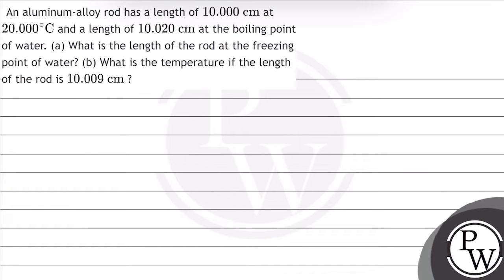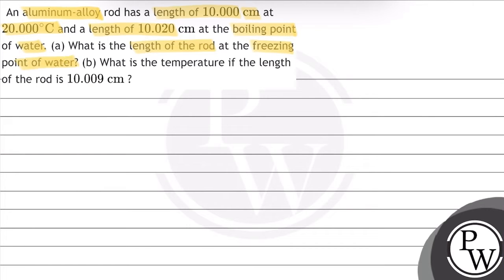Hello, let's read this question. An aluminium alloy rod has a length of 10.000 cm at 20 degree Celsius and a length of 10.020 cm at the boiling point of water. What is the length of the rod at the freezing point of water? What is the temperature if the length of the rod is 10.009 cm?